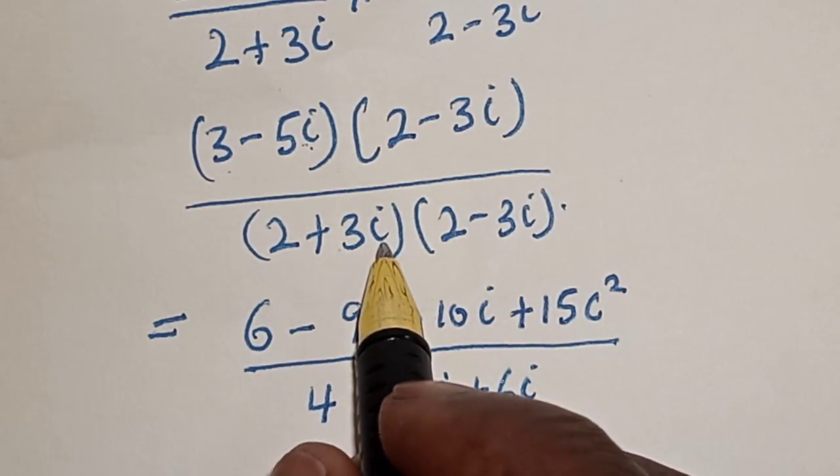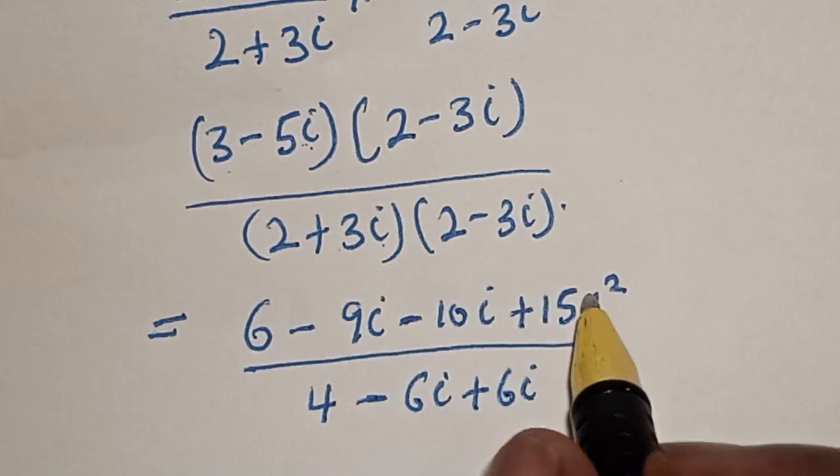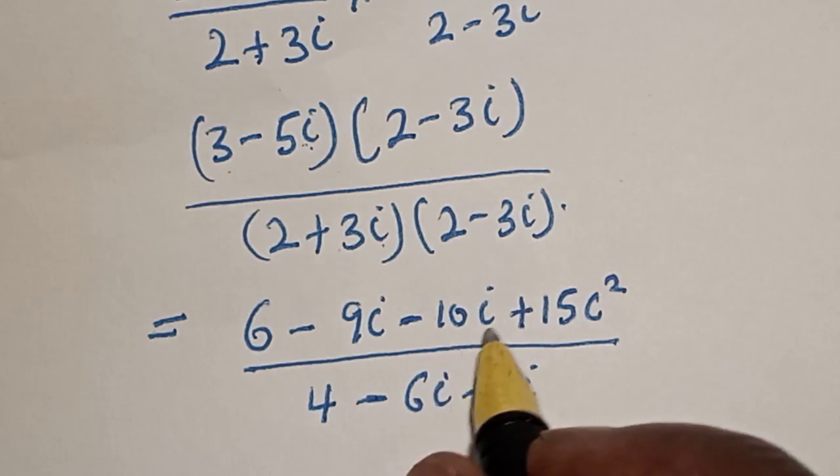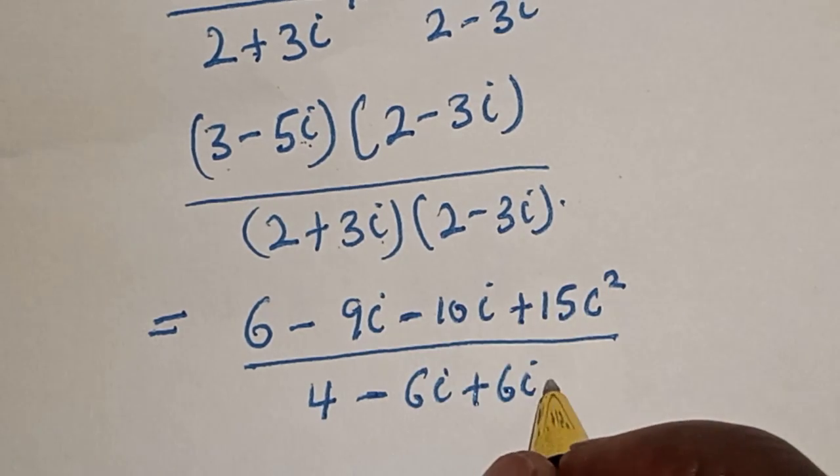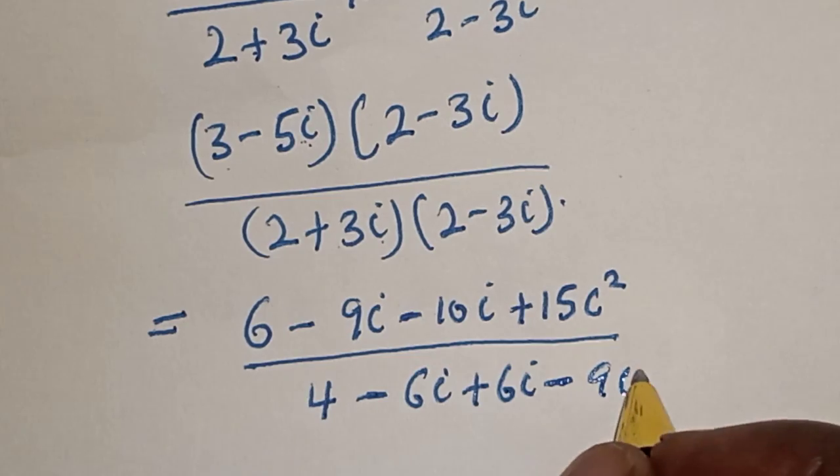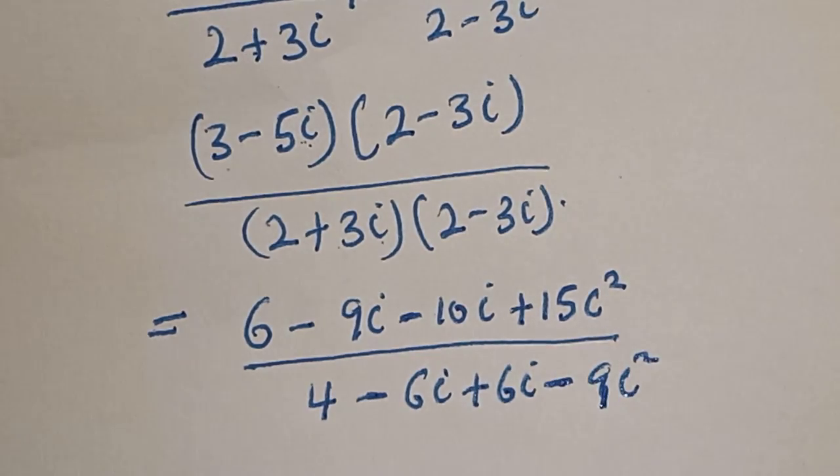Then, plus 3i times minus 3i. This is 3 times 3i. That is 9. Then, i times i. That is i squared minus 9i squared.